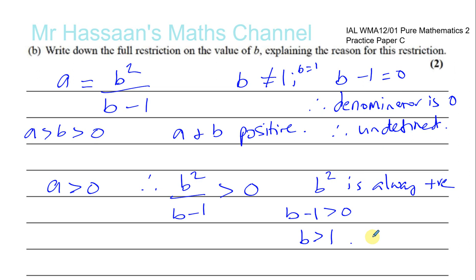So, basically, B has to be, the condition is B must be greater than 1 because A has to be positive. For A to be positive, okay, for A to be positive, B squared over B minus 1 has to be positive because that's what A is equal to. This is always positive,